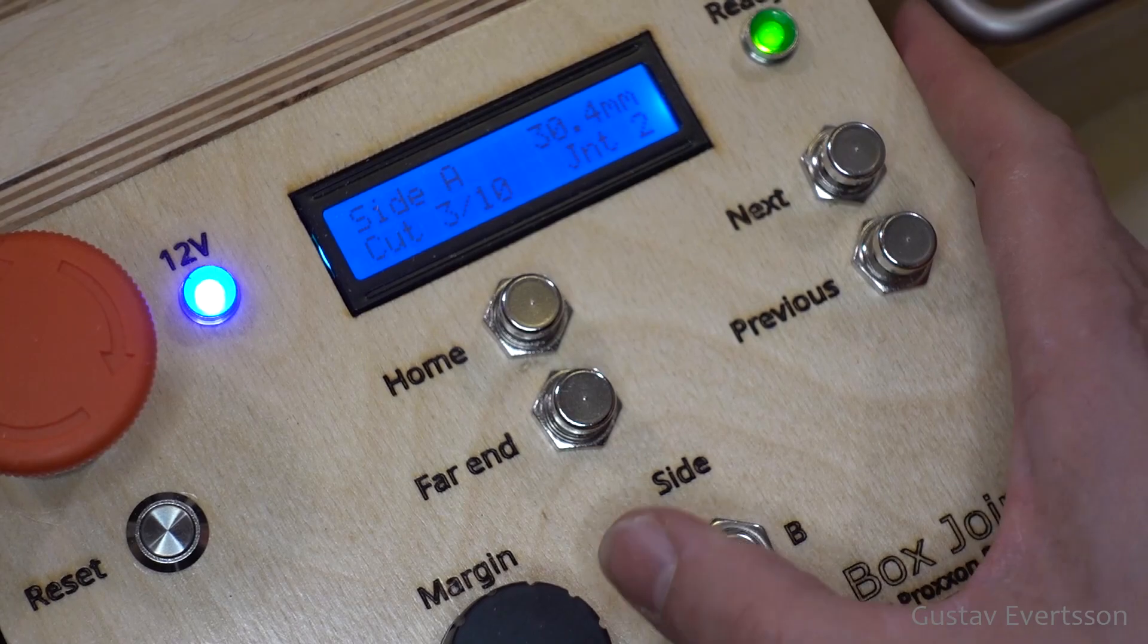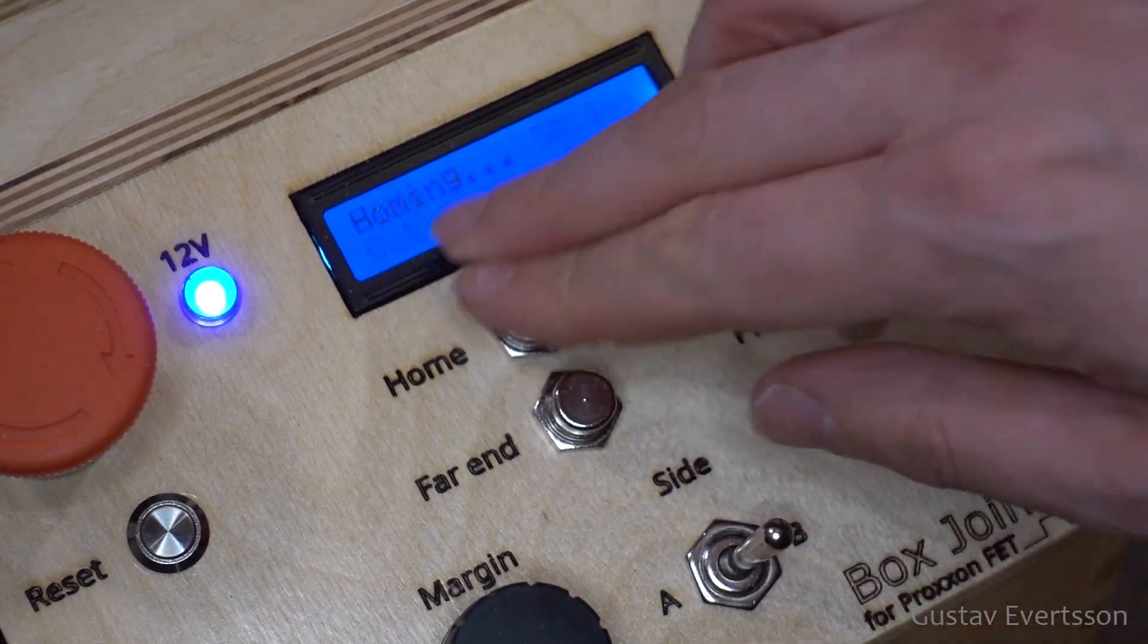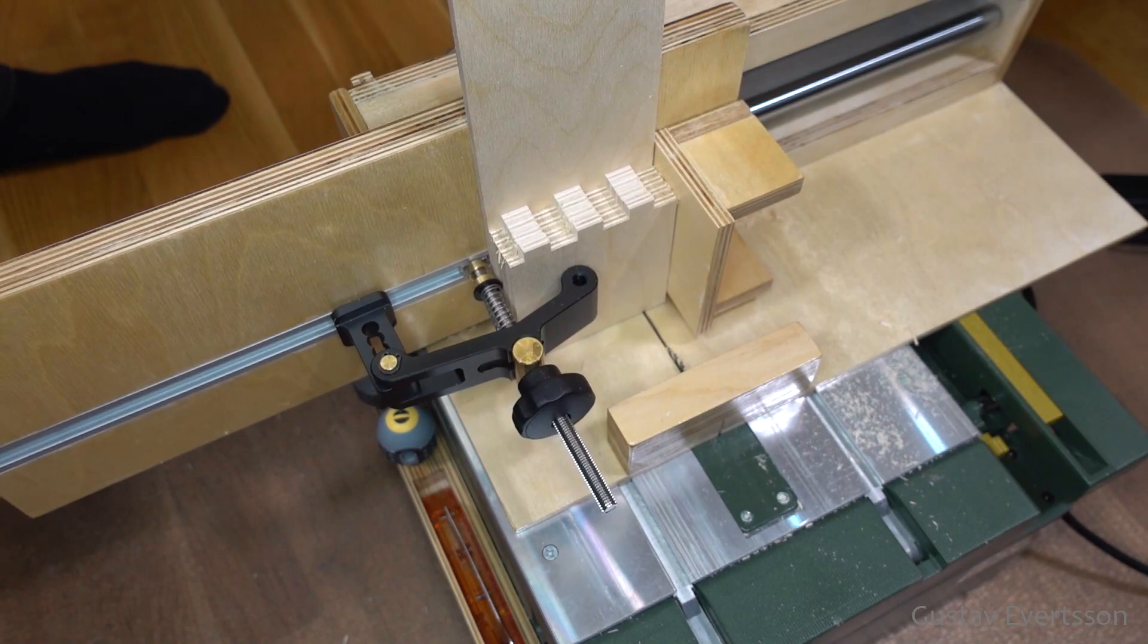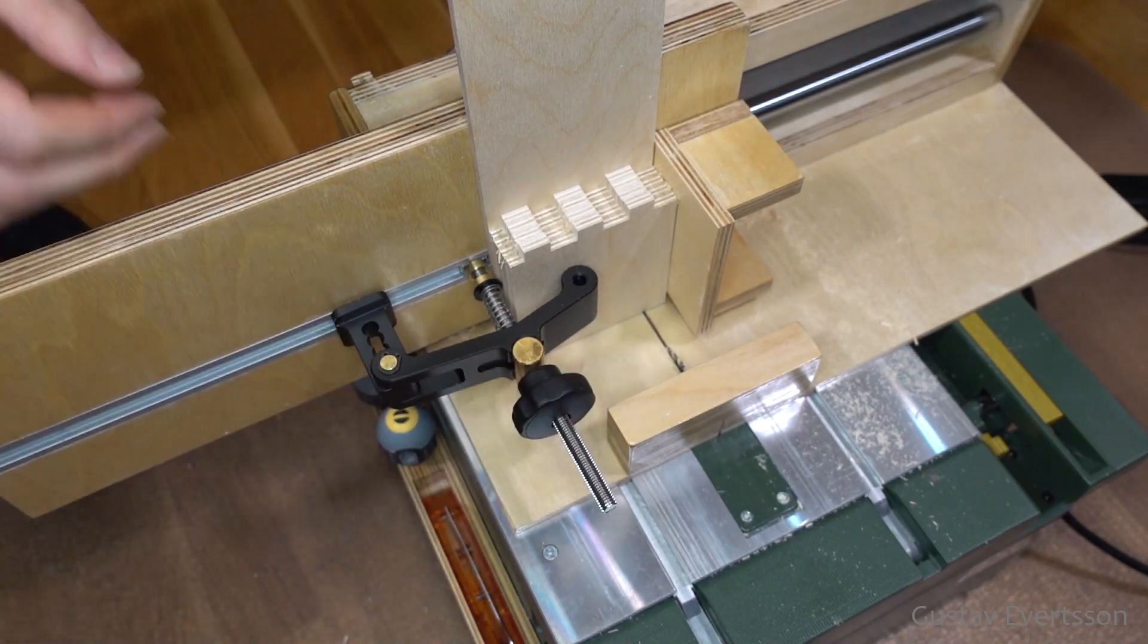We select side B and re-home it. The start position is now lined up to match the previous cuts. Then we just do the same as before.